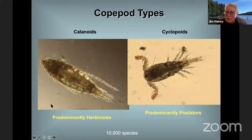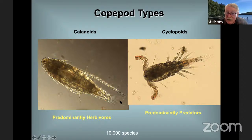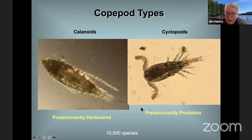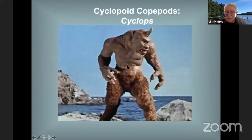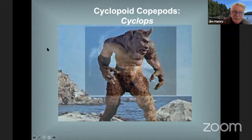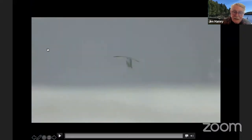Now for some copepods — some of these are really dangerous critters. Cyclopoid copepods: if you were a small newborn fish, some of these would attack you. They can be a real problem in fish hatcheries because they not only eat other zooplankton but will grab on to practically anything. This one is called Cyclops — and it's well named.